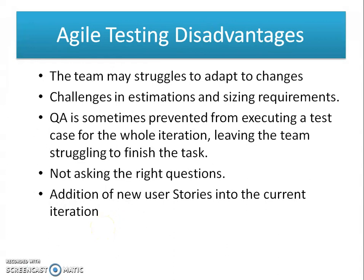The disadvantages of Agile testing include: the team may struggle to adapt to changes, and there are challenges in estimations and sizing requirements. QA is sometimes prevented from executing test cases for a whole iteration, leaving the team struggling to finish tasks. There is also the issue of not asking the right questions — QA may not ask the right questions at the time of implementation. Additionally, new user stories may be added into the current iteration unexpectedly.